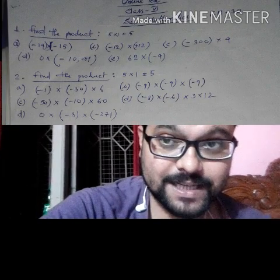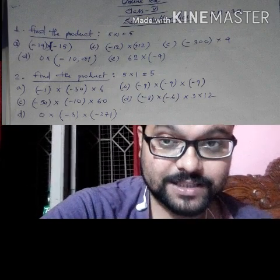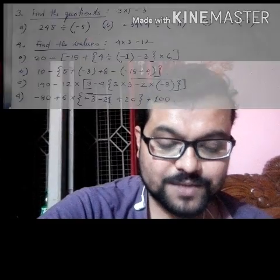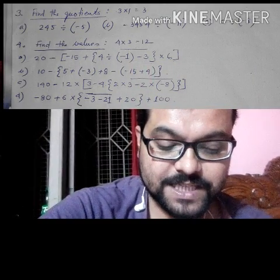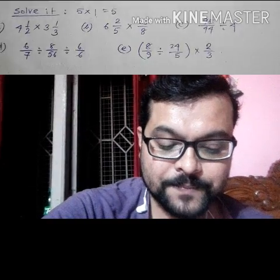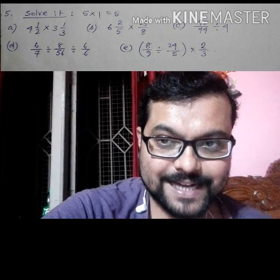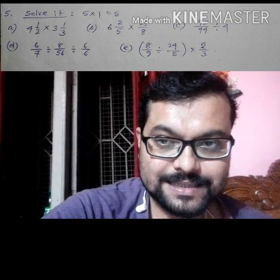Next question: find the values. See the math properly before doing it. First expression: 20 minus, within third bracket, minus 15 plus, within second bracket, 44 divided by minus 4, divided by minus 4, divided by in bracket minus 1, then minus 3 — that is under bar — then second bracket close, multiplied by 6, third bracket close.